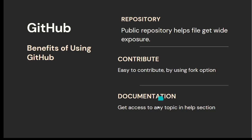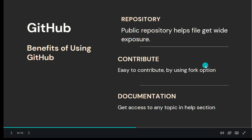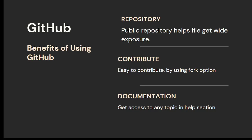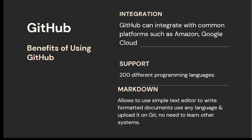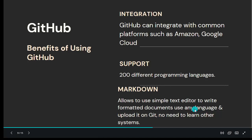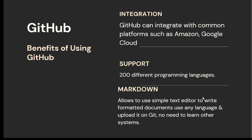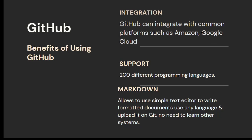Another benefit is documentation — if you have any problem, go to the help section and excellent documentation is available. GitHub can also be easily integrated with common platforms like Amazon and Google Cloud. It supports over 200 different programming languages. Markdown is another great feature — it's a simple text editor where you can use any language and upload it to GitHub without having to learn another system.